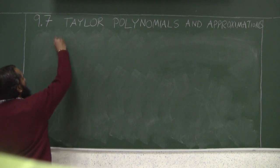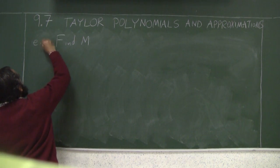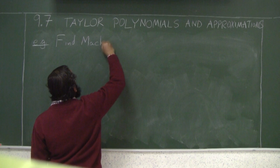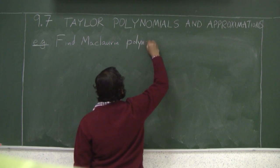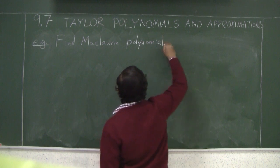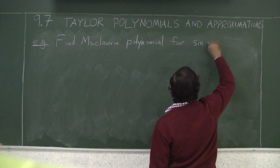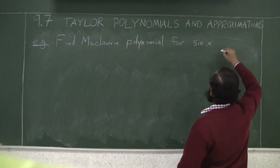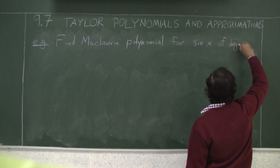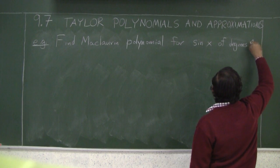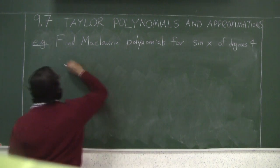Let's do one example right now. Find Maclaurin polynomial for sin x of degree 4 and 6.